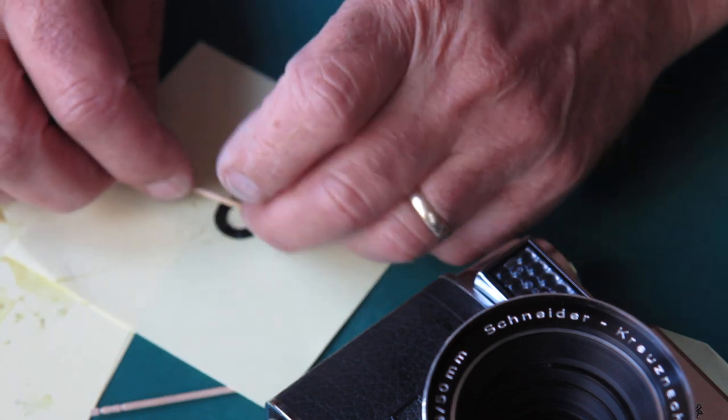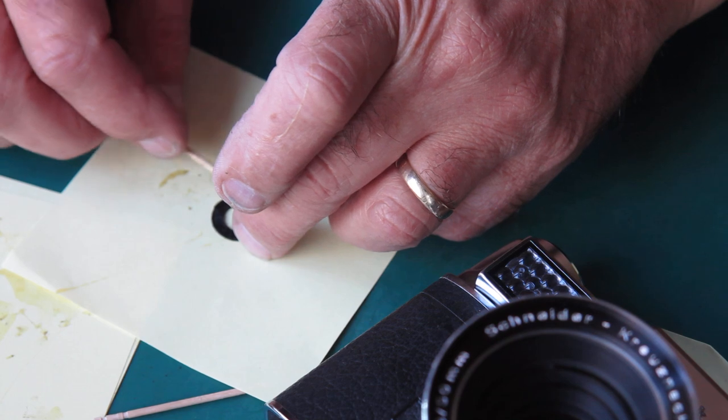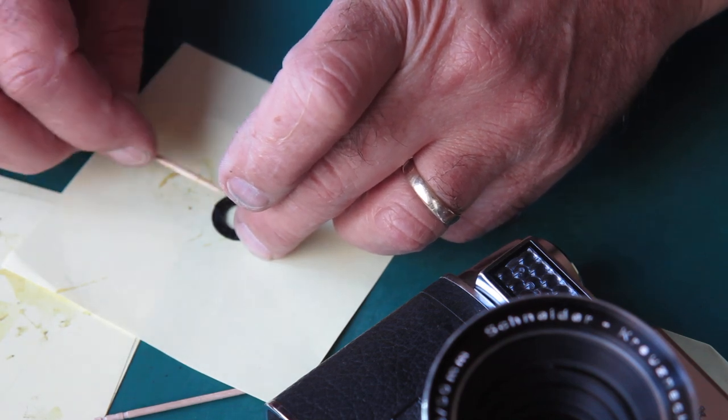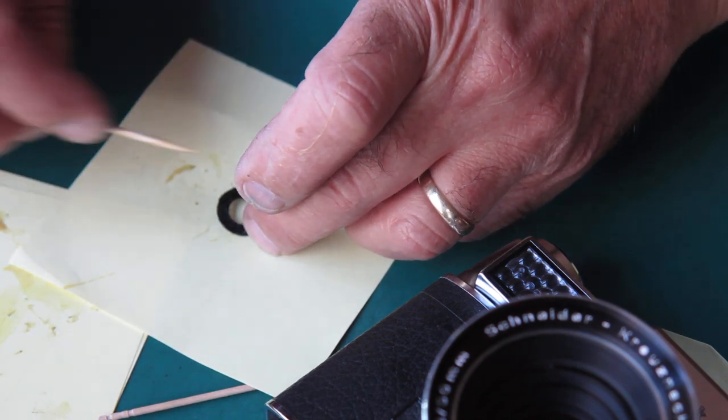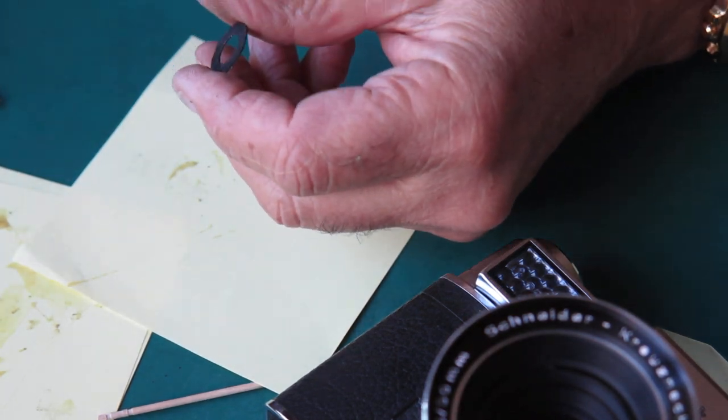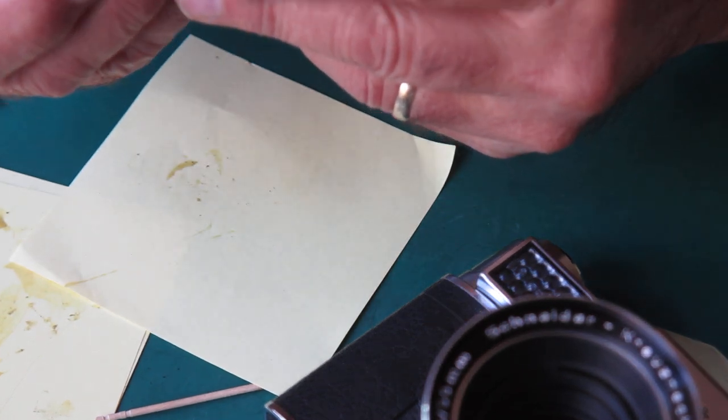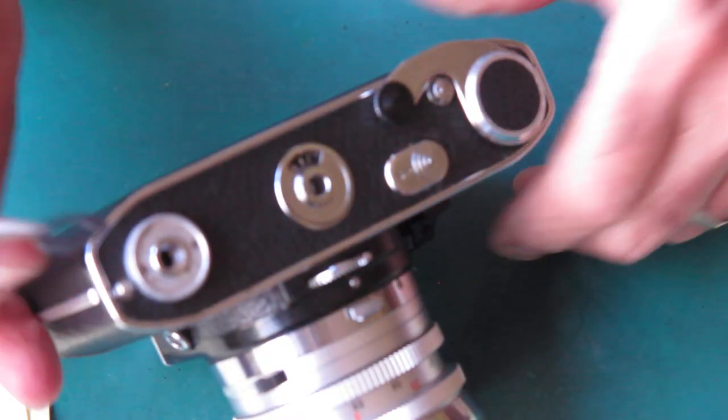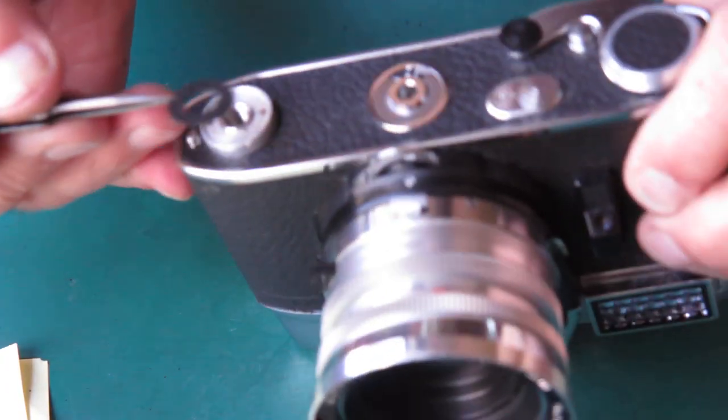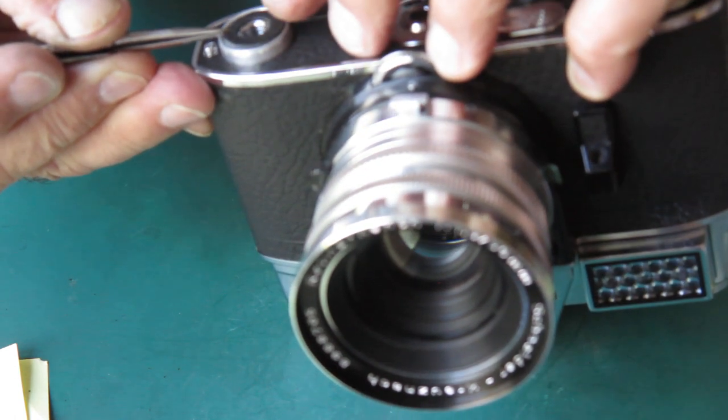When you're putting leatherettes on, I mean, it might sound like a silly thing, but make sure you've got them the right way up. I've seen cameras where people have put the adhesive on the wrong side and glued leatherettes on inside out. That's never a good look, and you can't really recover from that. Right, so this piece goes on. Same deal. There's a grain to the leatherette. Try and get it lined up.